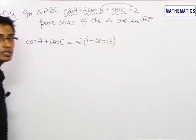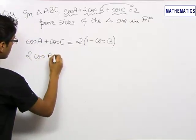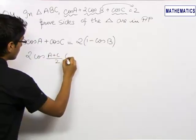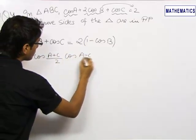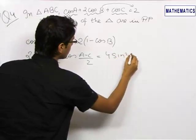Applying the formula for cos A + cos C to the left-hand side, we get 2 cos((A+C)/2) cos((A-C)/2) = 4 sin²(B/2).